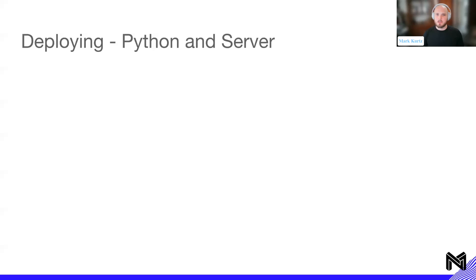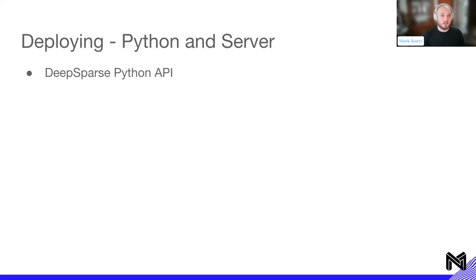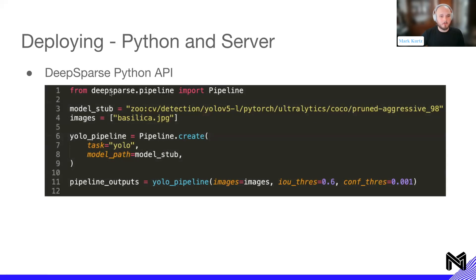Once we've tested the model through annotate and benchmark, here's what it looks like to move into deployment. Using the DeepSparse Python API — good for edge applications, demos, or plugging into an application — you import a pipeline from deepsparse, give it your model stub or ONNX model, and feed it images as local files. We create a YOLO pipeline, which includes all necessary pre-processing and post-processing, so the output is just the detection boxes. You can set an IOU threshold and a confidence threshold based on your hyperparameters.